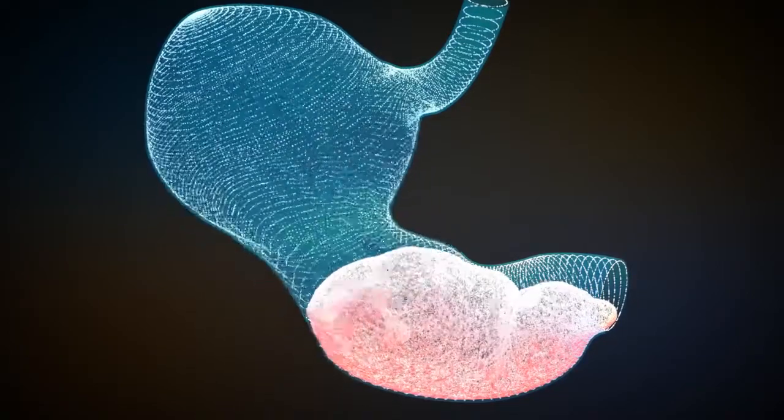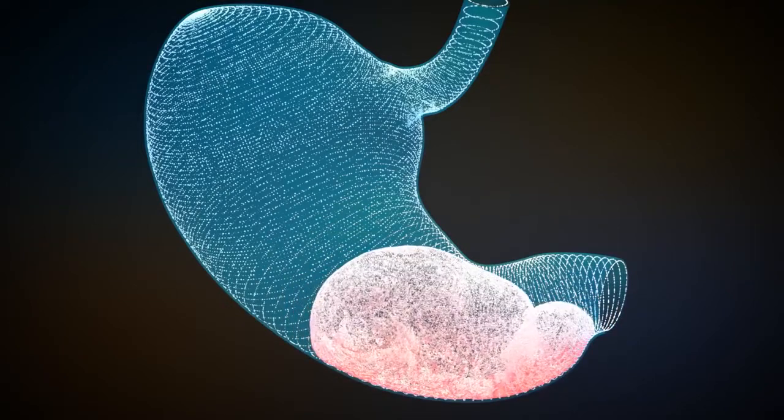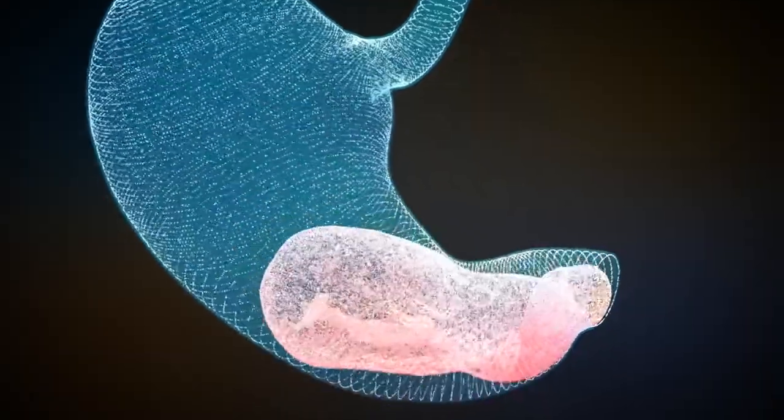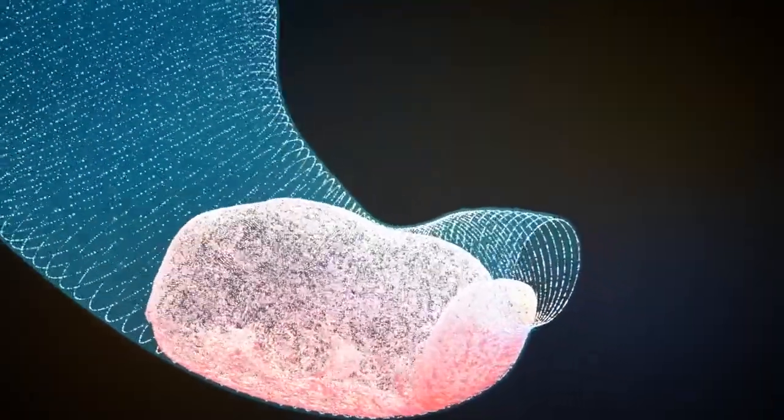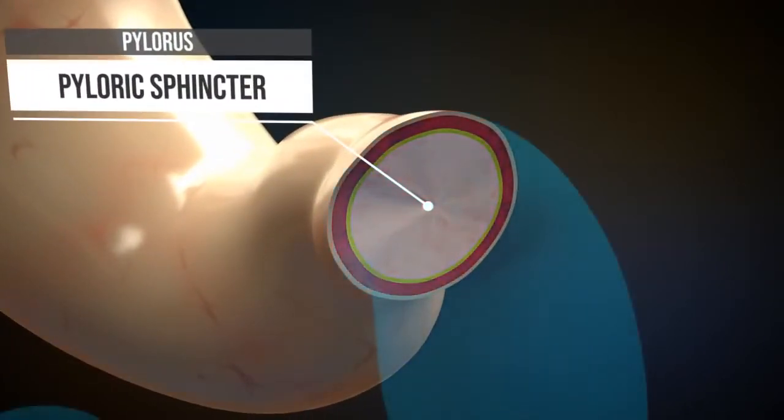The chyme cannot enter the duodenum at first because there is a sphincter at the stomach exit. The pyloric sphincter resembles the esophageal sphincter. The pyloric sphincter opens only a few millimeters so that larger pieces remain inside the stomach.